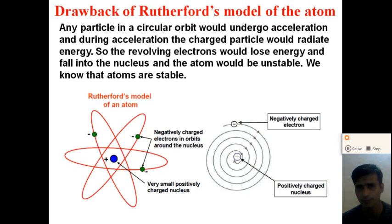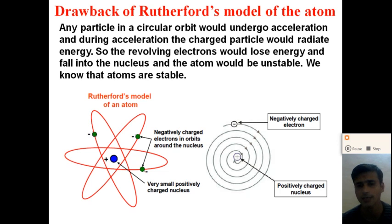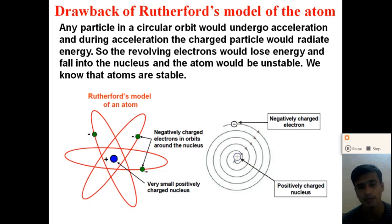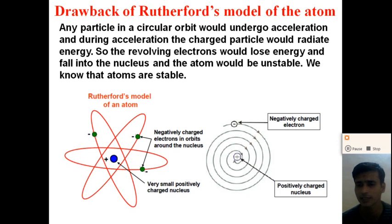The second drawback of Rutherford's model is that the distribution of electrons in different orbits cannot be explained. The stability of the atoms also cannot be explained by Rutherford's model. These are the limitations and disadvantages of Rutherford's model of an atom.